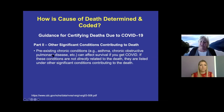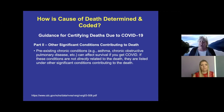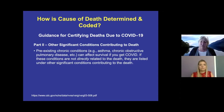In the Part 2 section — Other Significant Conditions Contributing to Death — this is where you would put pre-existing chronic conditions that may affect survival if you get COVID. For instance, people have talked about how asthma, pre-existing heart disease, or chronic obstructive pulmonary disease (COPD) may affect your survival if you come down with COVID. So those things can be listed in Part 2. They probably didn't directly relate to the death, but they may have contributed in some way.